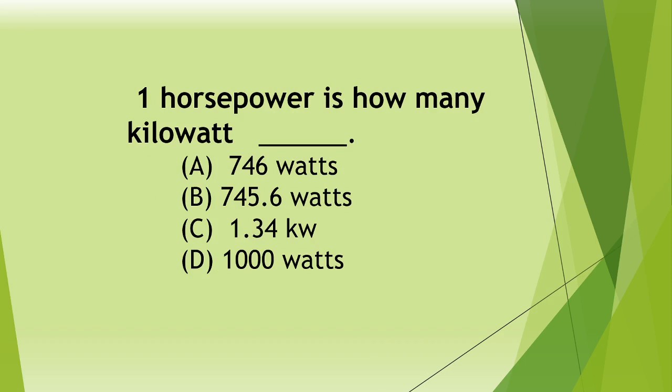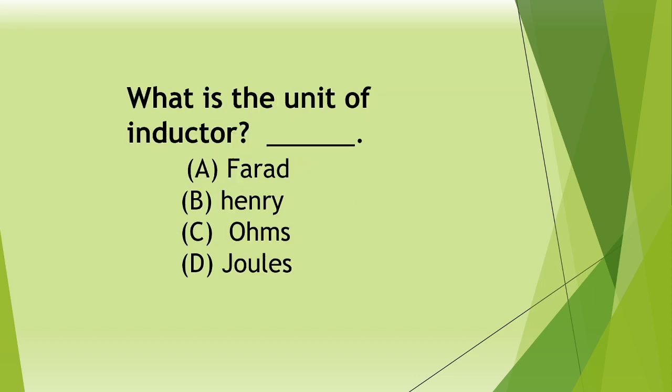Next. One horsepower is how many kilowatt? A 746, B 745.6, C 1.34, D 1000 watts. Answer: C 1.34 kilowatt.